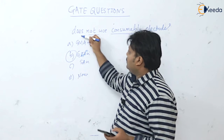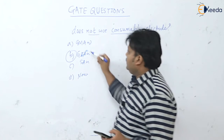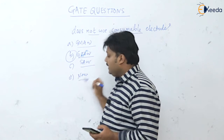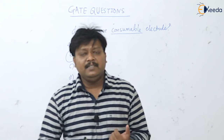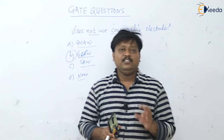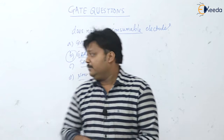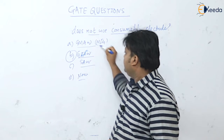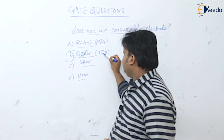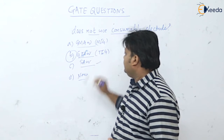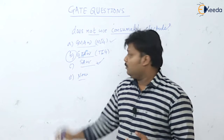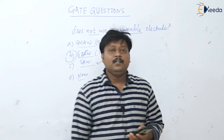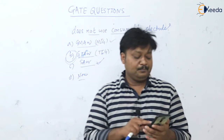Next: which one of the following welding processes does not use a consumable electrode? Options: gas metal arc welding (MIG), gas tungsten arc welding (TIG), submerged arc welding, and none of the above. In TIG welding, tungsten is used as the non-consumable electrode. MIG and submerged arc welding use consumable electrodes. So the answer is gas tungsten arc welding.